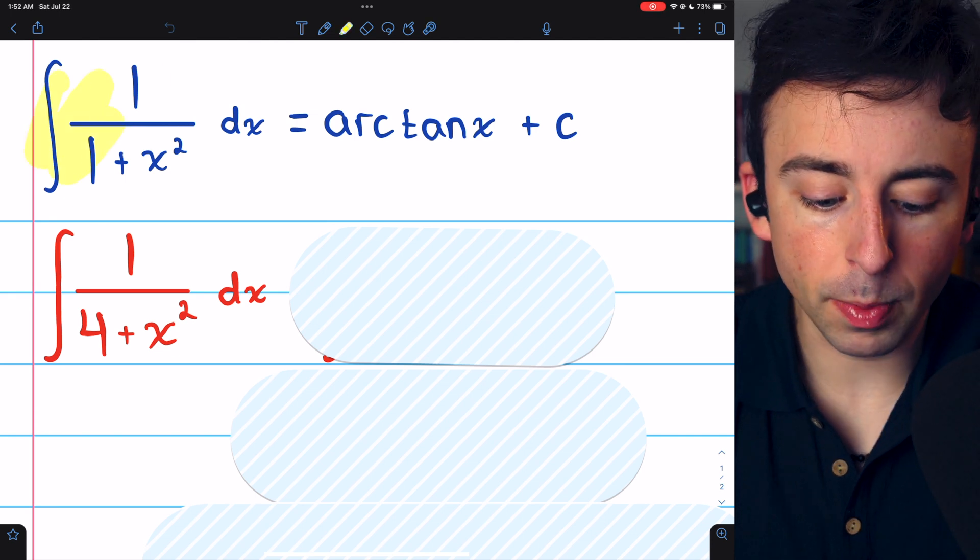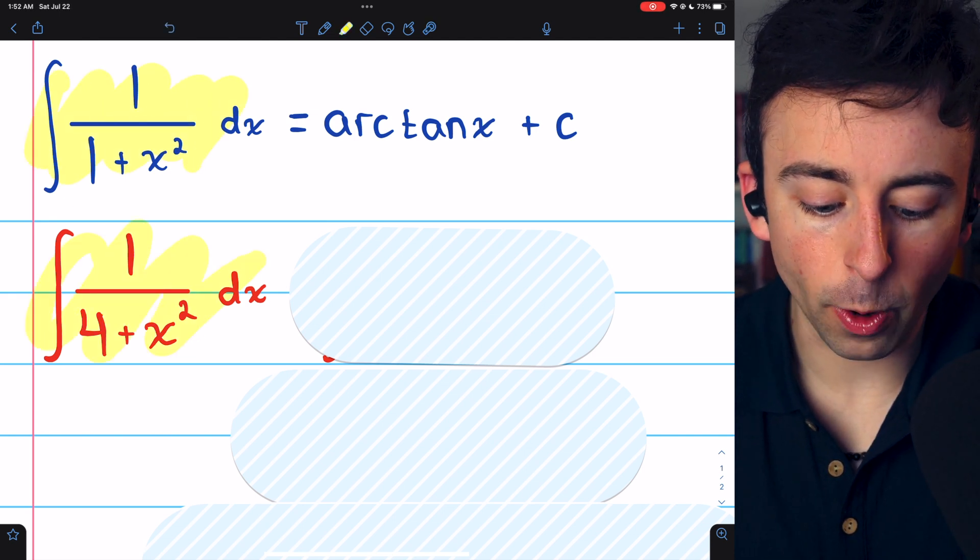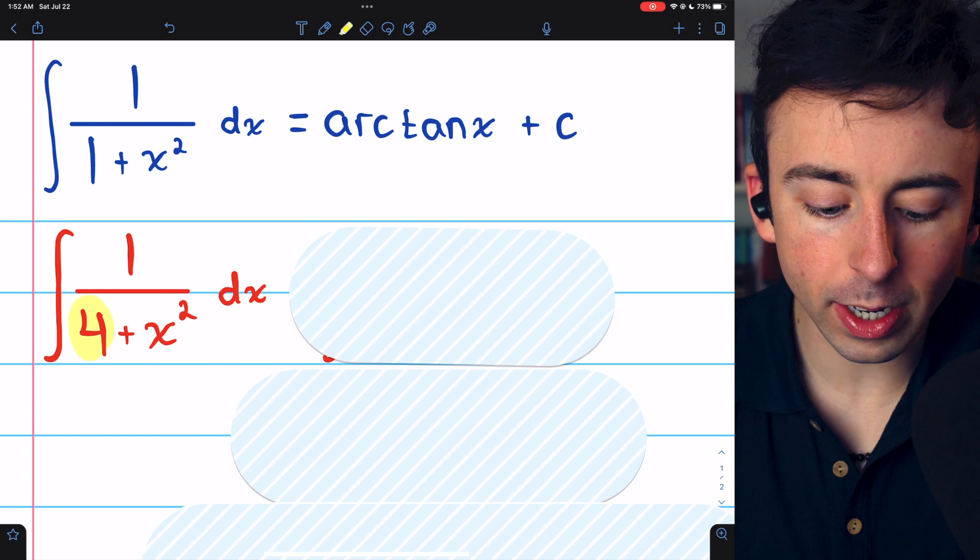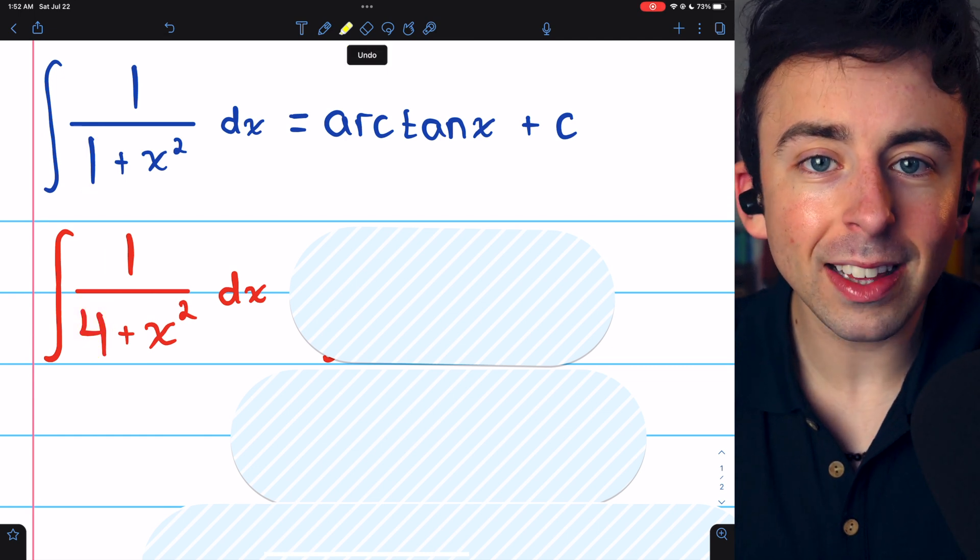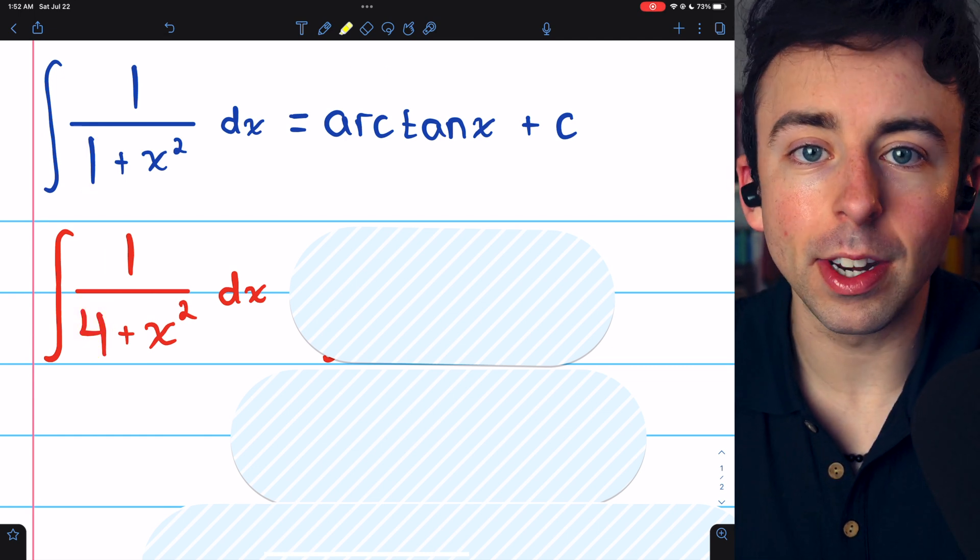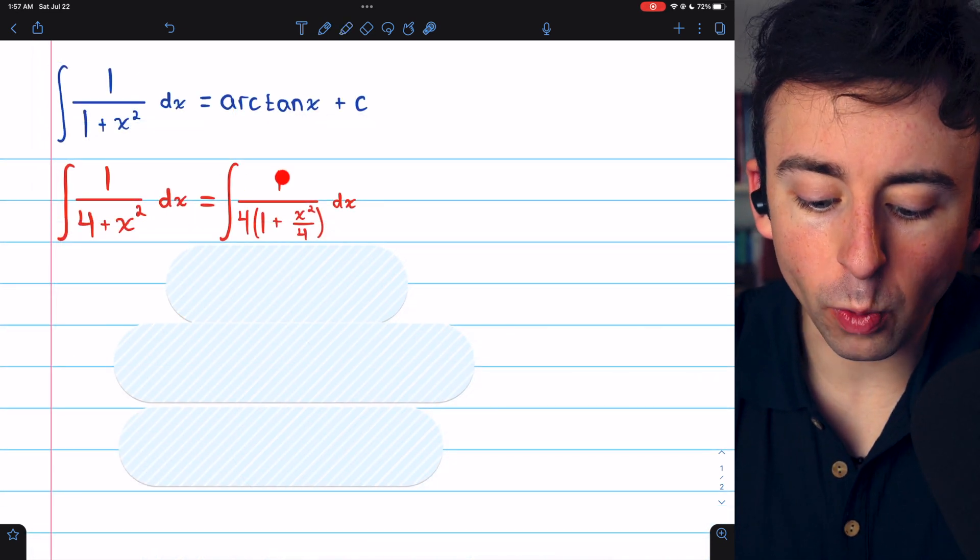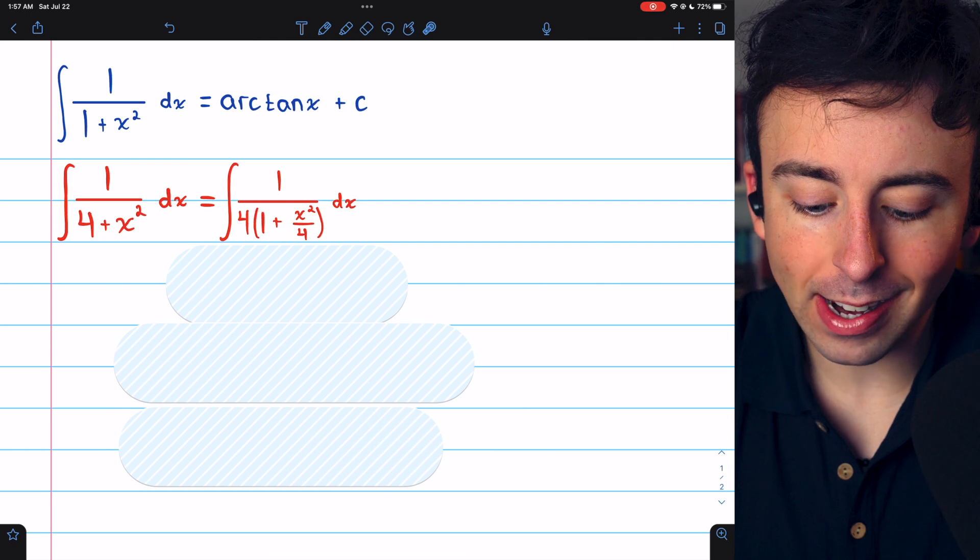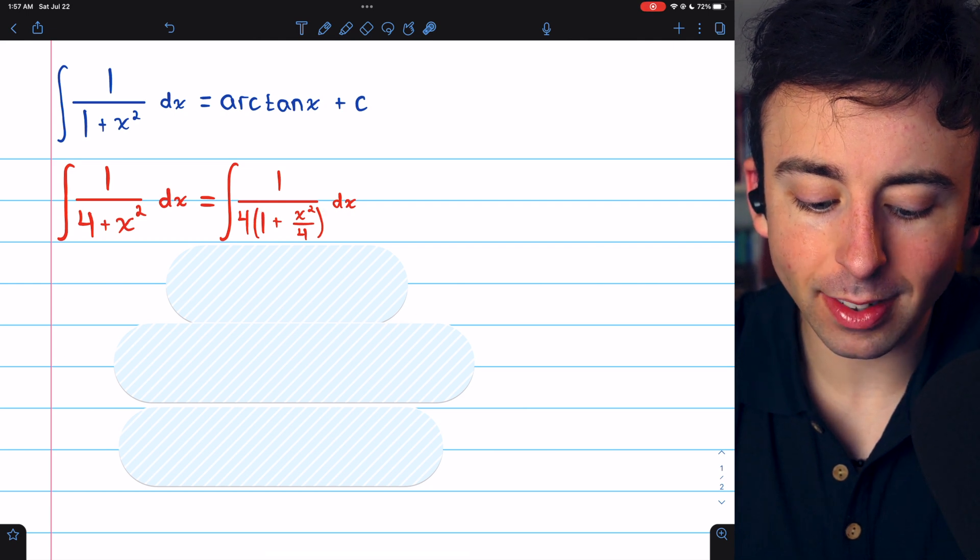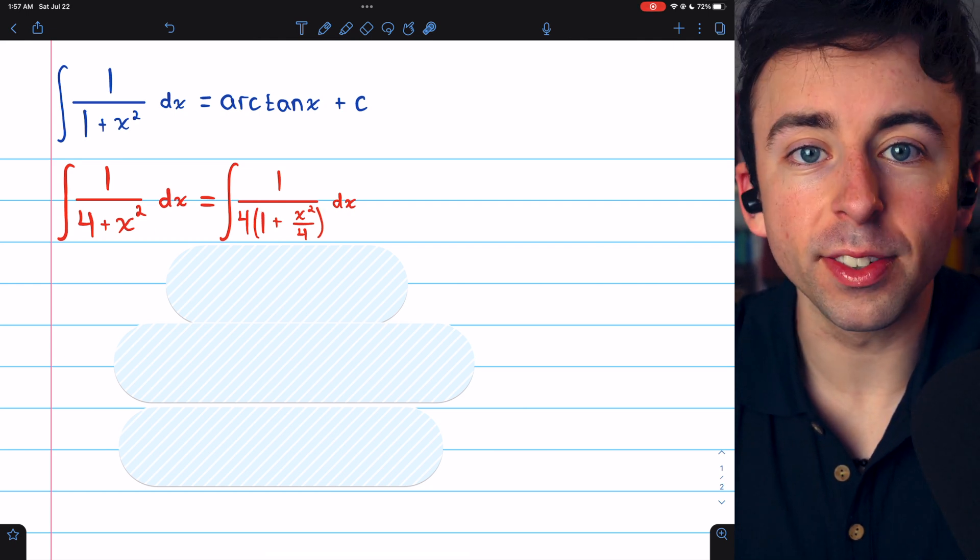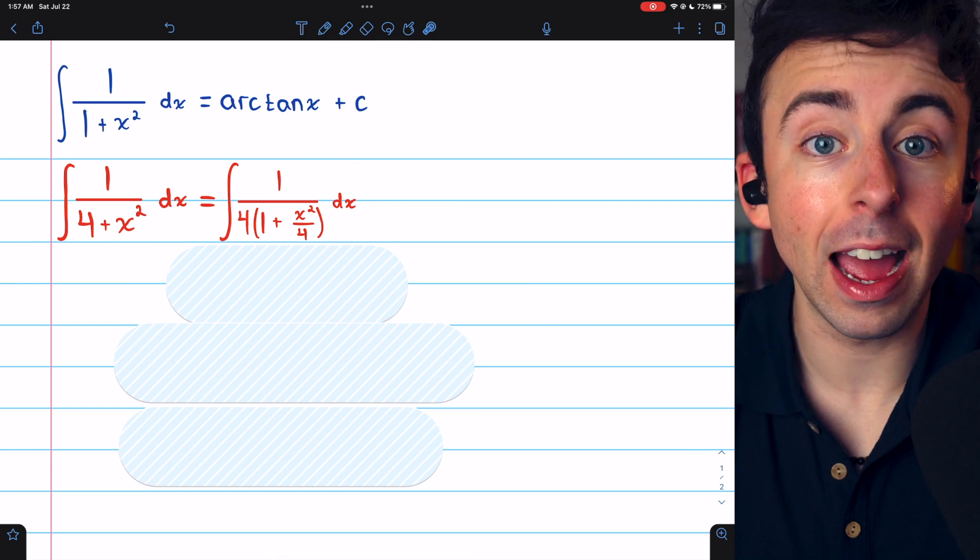The big difference right now between this formula and our integral is that we have a 4 instead of a 1. So let's factor that 4 out of the denominator. Factoring the 4 out of the denominator, we have the integral of 1 over 4 times 1 plus x squared over 4, since we have to factor the 4 out of everything.